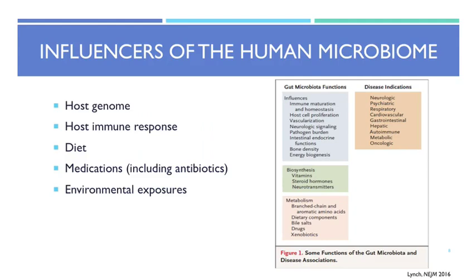Many things influence the microbiome. The host genome and immune responses have an impact — autoimmune diseases can influence what bacteria grow in the GI tract. But the big separators that make us unique are diet, medications, and environmental exposures. Diets high in vegetables keep the microbiome in homeostasis, while diets higher in red meat can promote bacteria associated with GI upset. So when your mom told you to eat your vegetables, maybe it really does help.